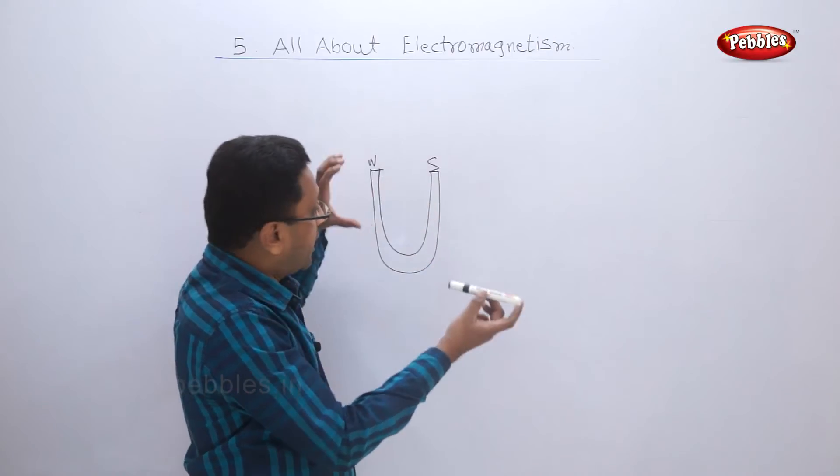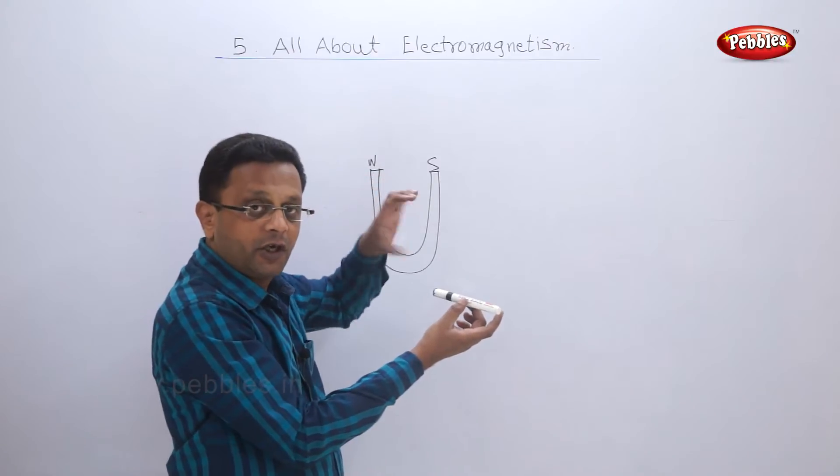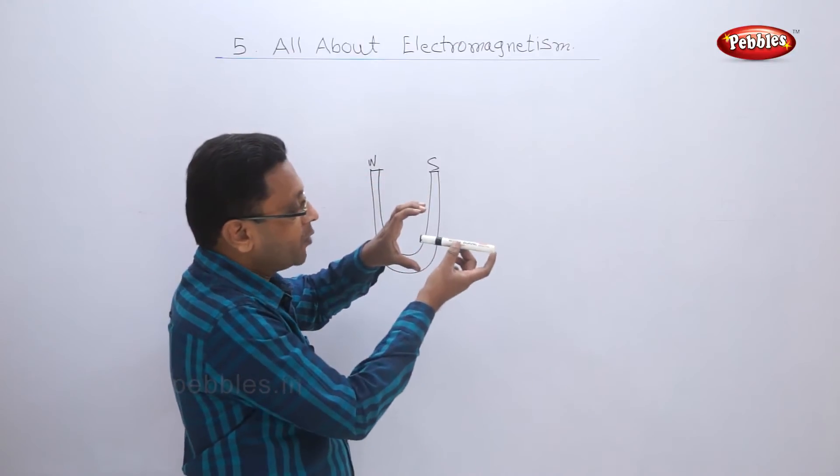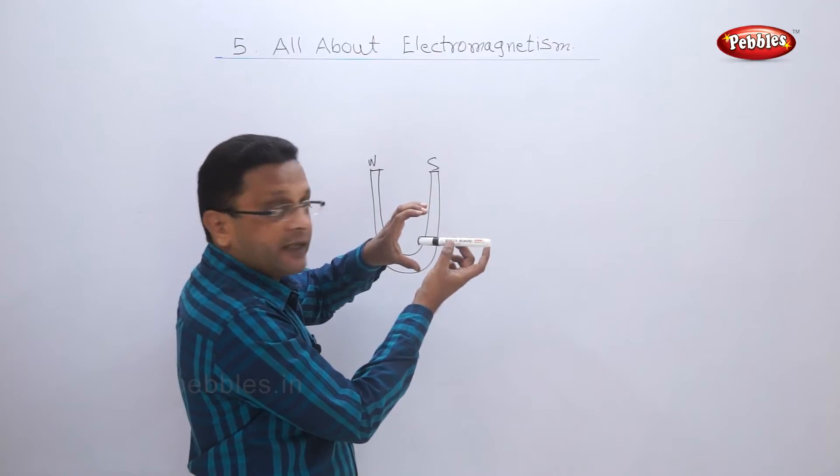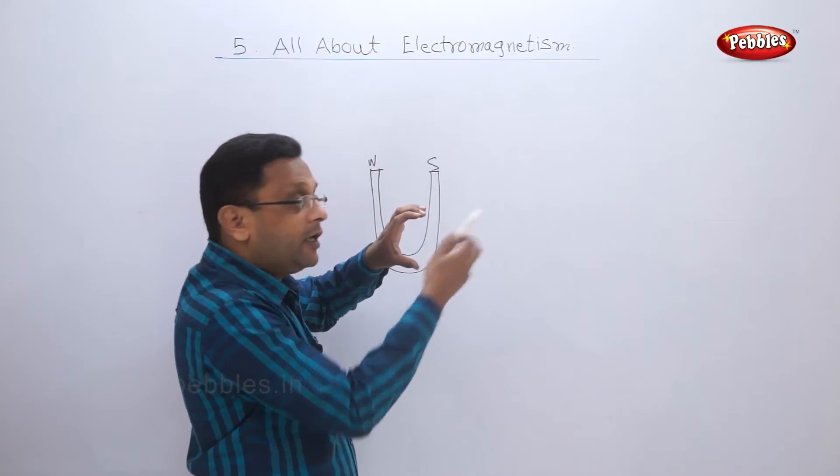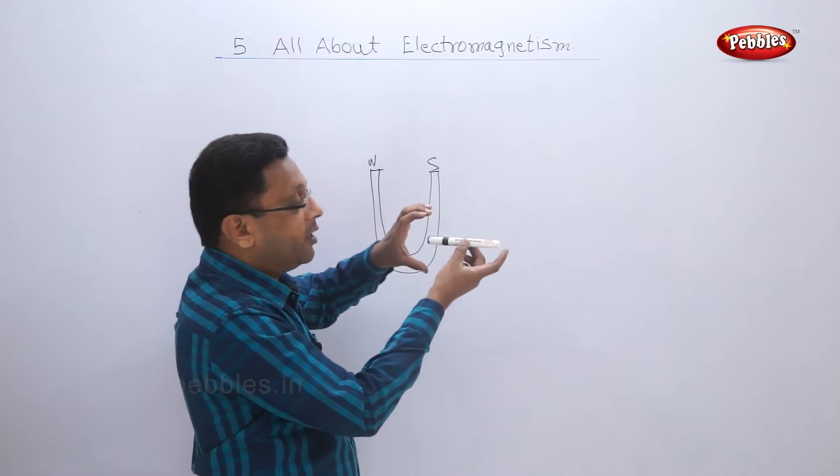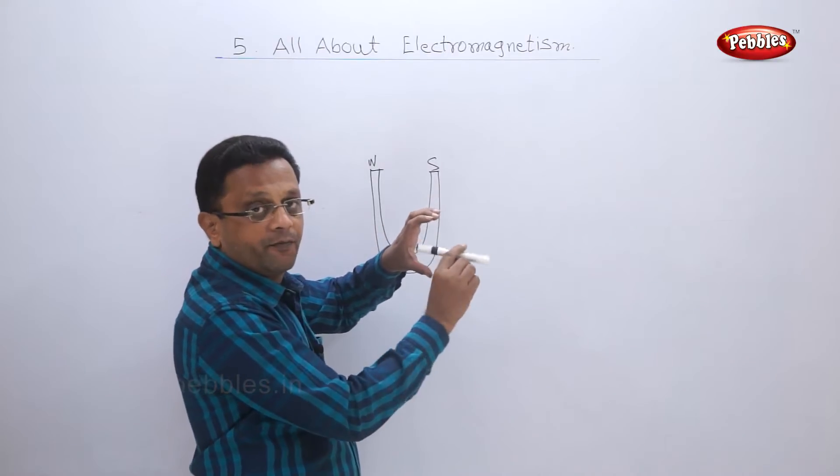As this horseshoe magnet is fixed, this cannot be deflected - this is fixed. And so this rod will be deflected towards the right. And if you reverse the current, it will be deflected towards the left.